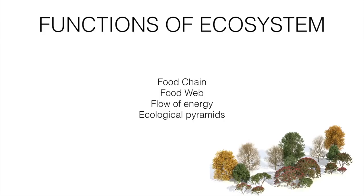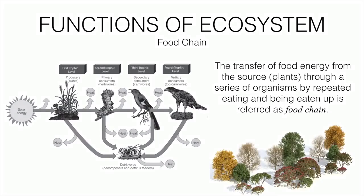The functions of an ecosystem involve four things: food chain, food web, flow of energy, and ecological pyramid. A food chain is the transfer of food energy from the source — generally starting from plants — through a series of organisms by repeated eating and being eaten. For example, grasses are eaten by caterpillars, caterpillars are eaten by birds, and birds are eaten by eagles.